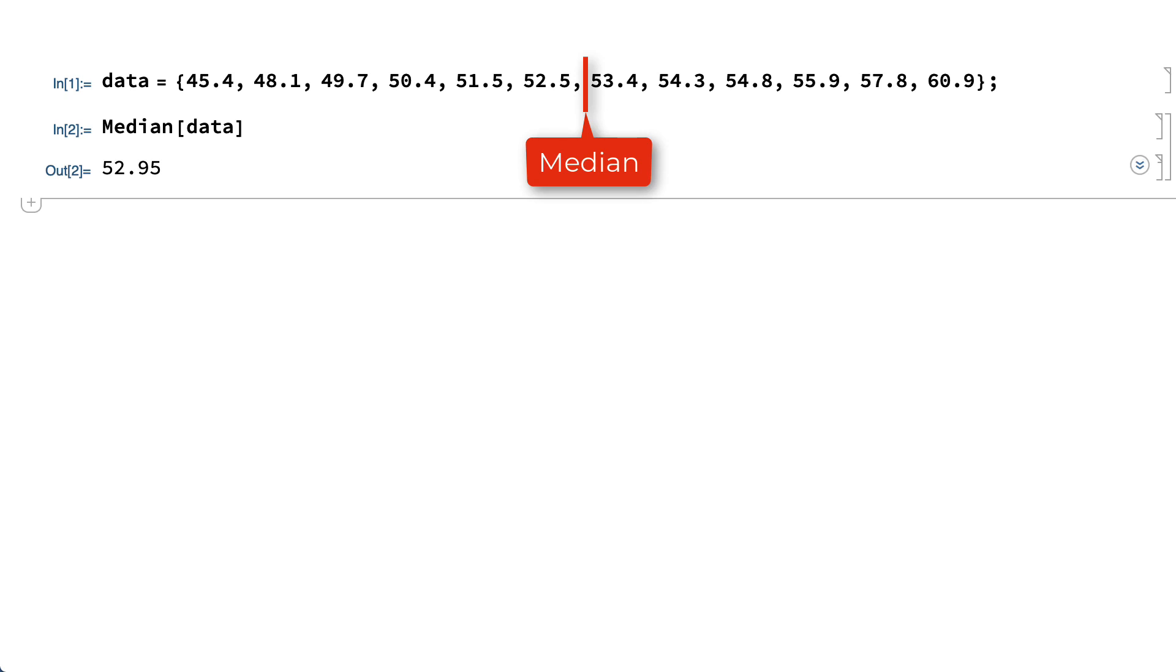For example, starting with some sample data, the general location of numerical data on a number line is most often described using either the median or the mean. The median is a number in the middle of the data, so it separates the data into two halves, and the mean is just the average.